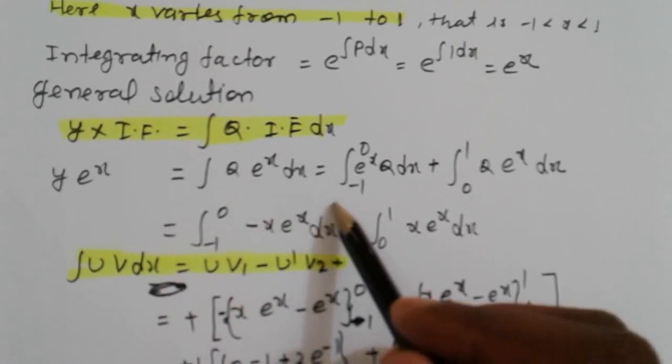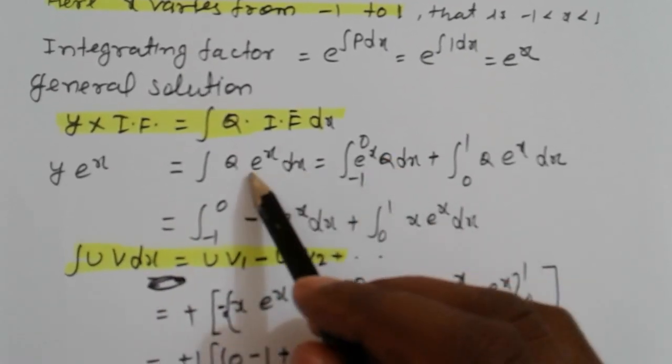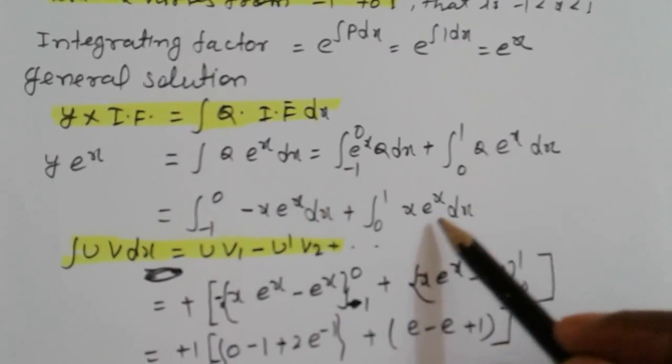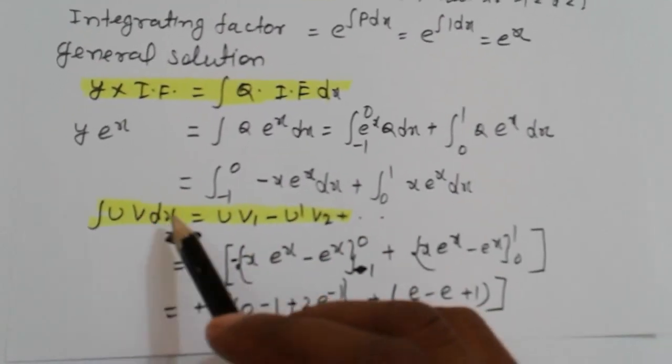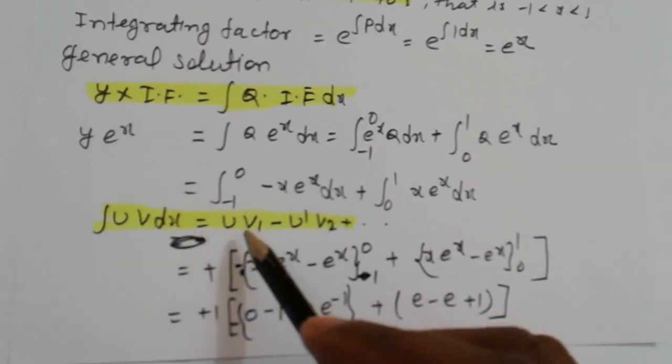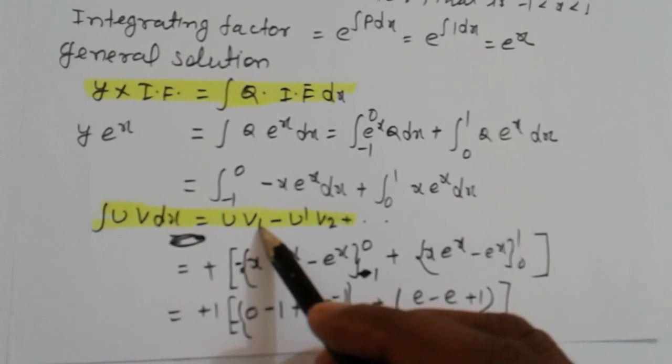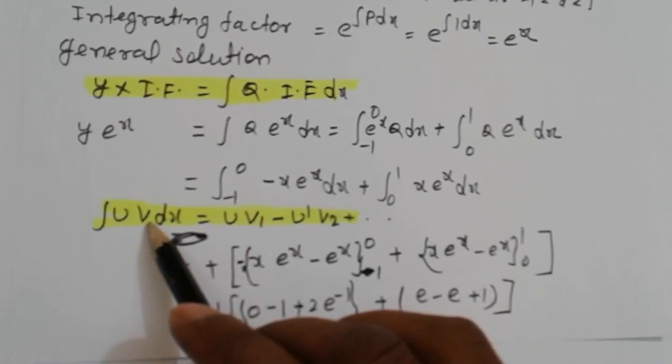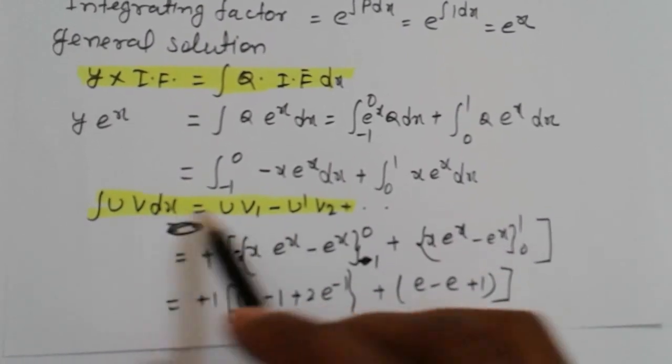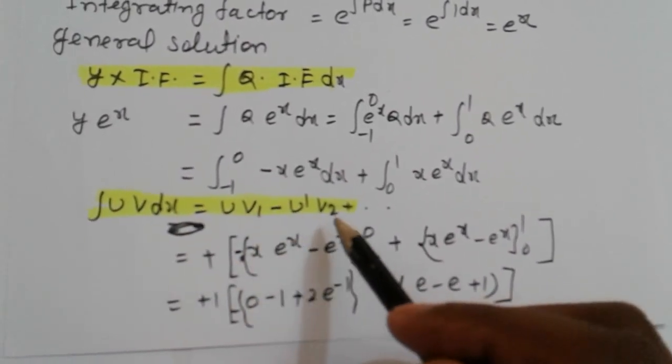Minus 1 to 0, minus X e raised to x dx, that is the value of Q. And here Q is X. So here apply the LIATE rule: integral u v dx equals u v1 minus integral u dash v1, where v1 means integration of v, and u dash means derivative of u.